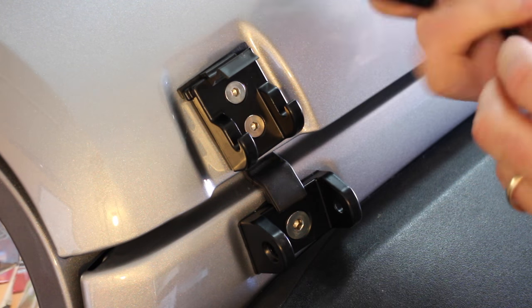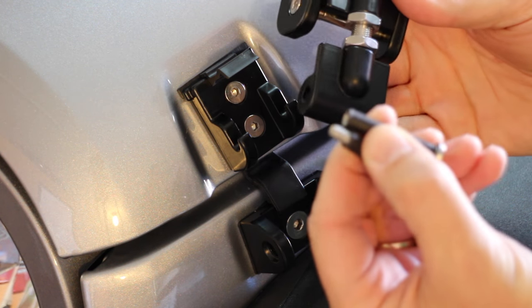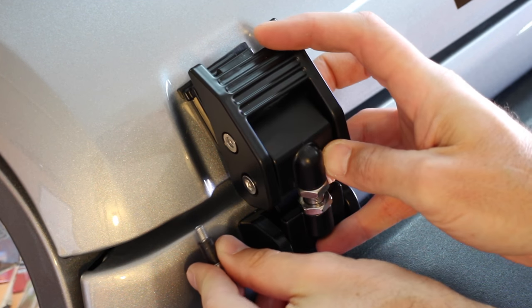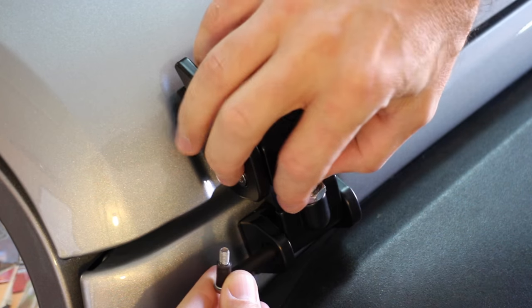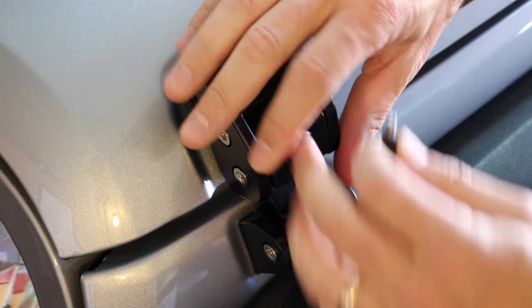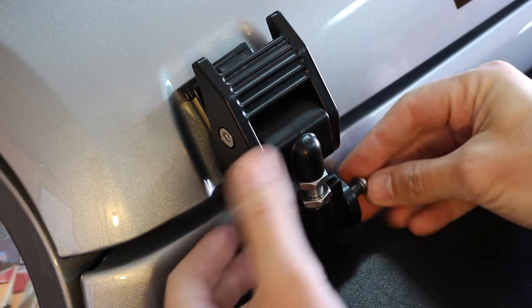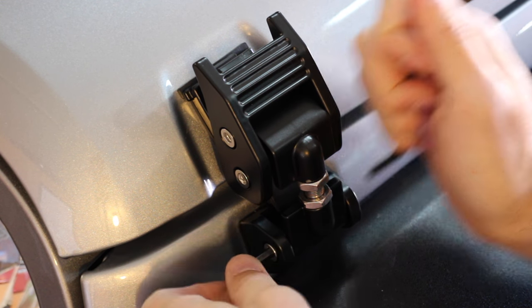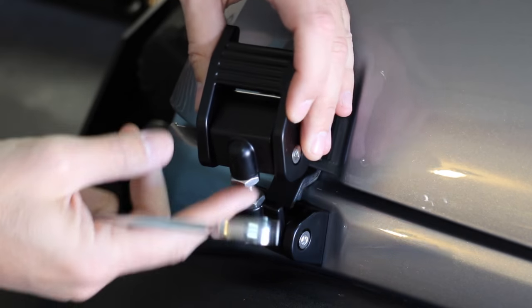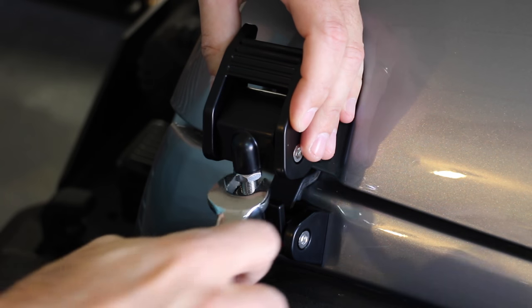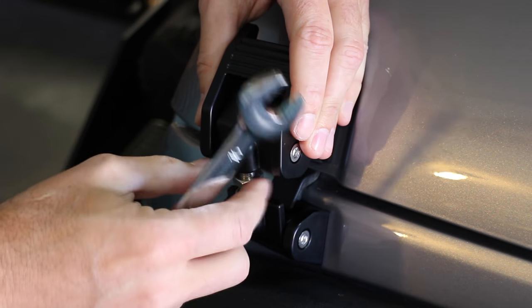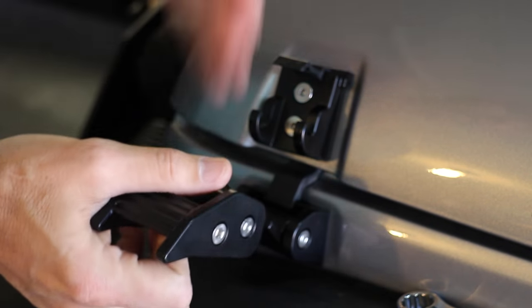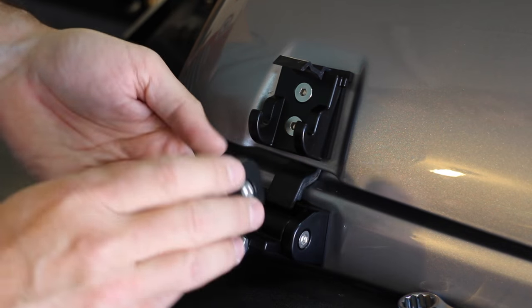Alright, now we're going to put the latch assembly back on, putting those pins through that we used with the 5mm Allen wrench. Alright, next thing we want to do is set the tension on this. So there's the jam nut. You need a 16mm wrench to loosen that up. And then if you turn this clockwise, it'll tighten it. Counterclockwise, it'll loosen it.